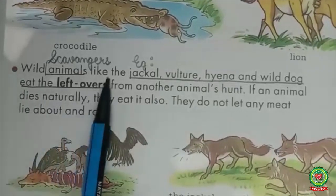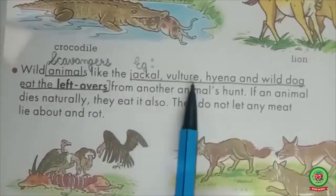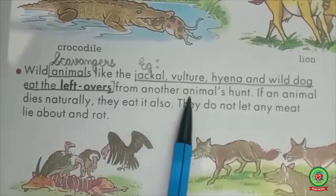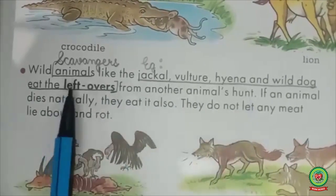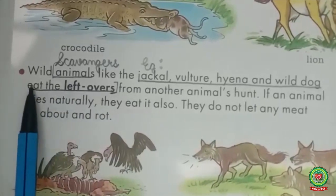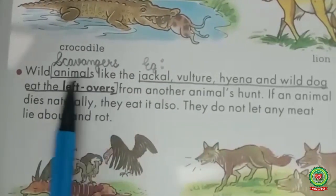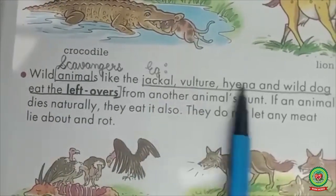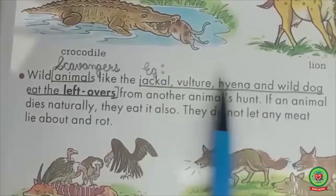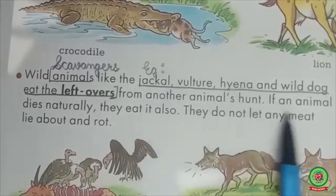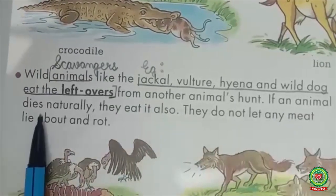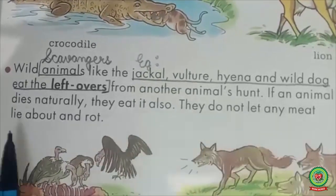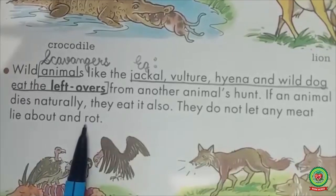Wild animals like the jackal, vulture, hyena, and wild dog eat the leftovers from other animals' hunts. Animals who eat the leftovers of other animals are known as scavengers. Jackal, vulture, hyena, and wild dog are some examples of scavengers. If an animal dies naturally, they eat it also — they do not let any meat lie about and rot.